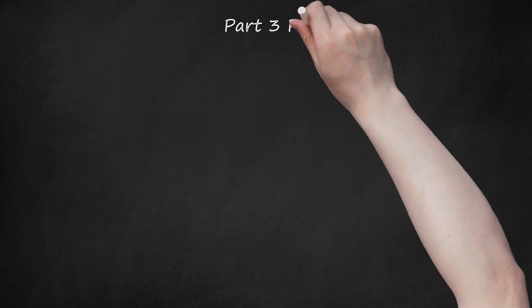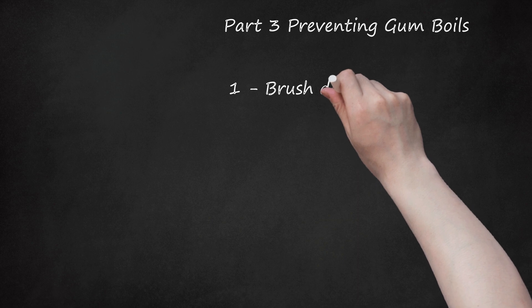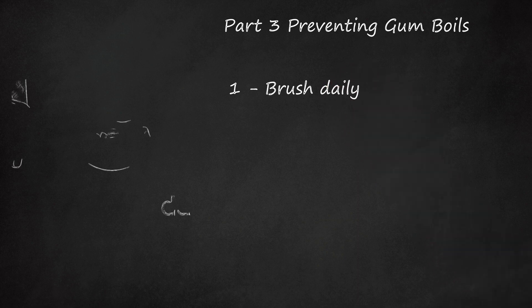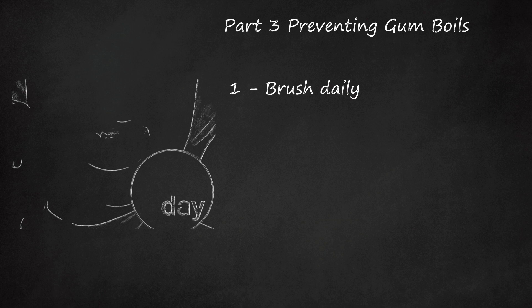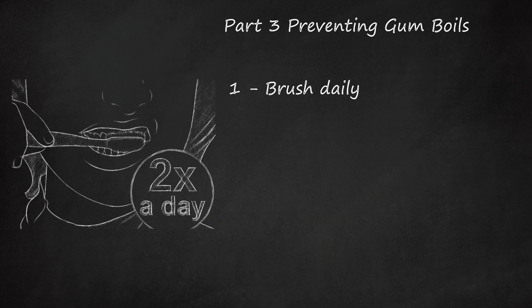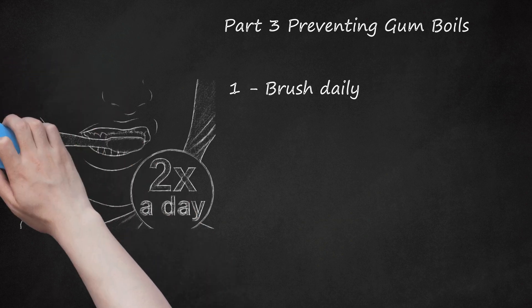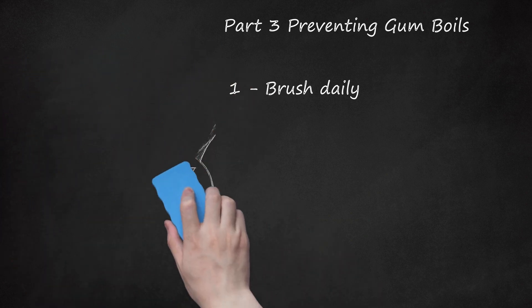Part 3: Preventing Gum Boils. Brush Daily. Brushing your teeth regularly, at least twice a day, is probably the single most important thing you can do to prevent gumboils and to contribute positively to your general oral health. Brushing helps reduce bacteria and germs that are present in your mouth, as well as removing plaque and food particles. Use a toothbrush with soft bristles and talk to your dentist about proper brushing technique.